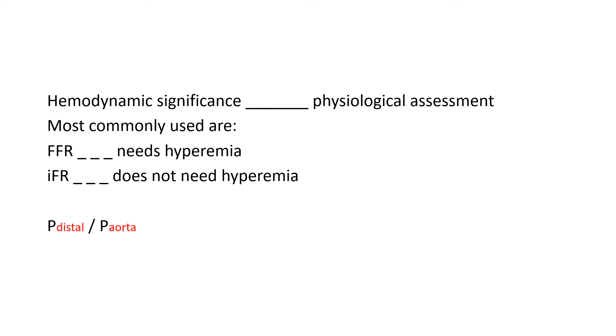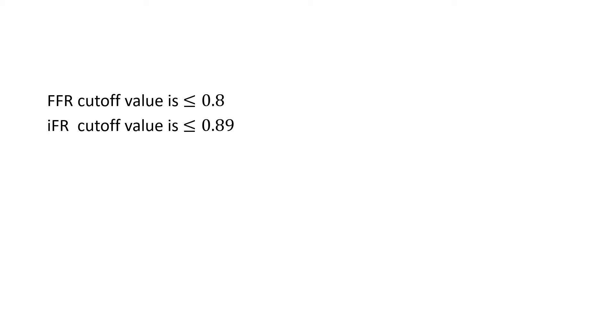In essence, both measure the ratio of pressure distal to the lesion compared to the aortic pressure, and both tests have been validated in clinical trials. For FFR, the cutoff value is 0.8 — anything equal to or less than 0.8 is considered significant and needs treatment — while the cutoff value for iFR is 0.89.